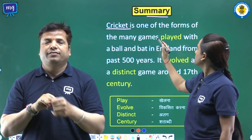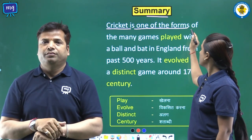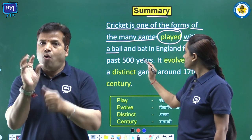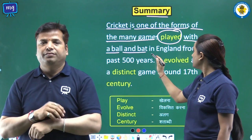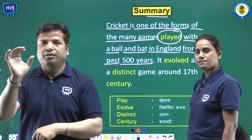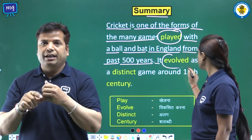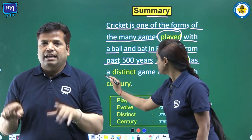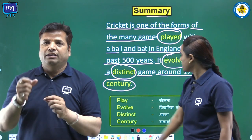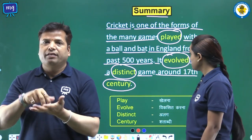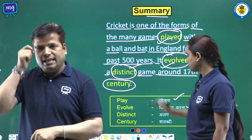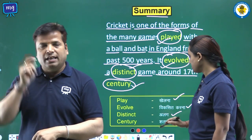Cricket is one of the many games played with a ball and bat in England from the past 500 years. It evolved as a distinct game around the 17th century. Word meanings: play — khelna; evolved — viksit karna; distinct — alag; century — shatabdi.